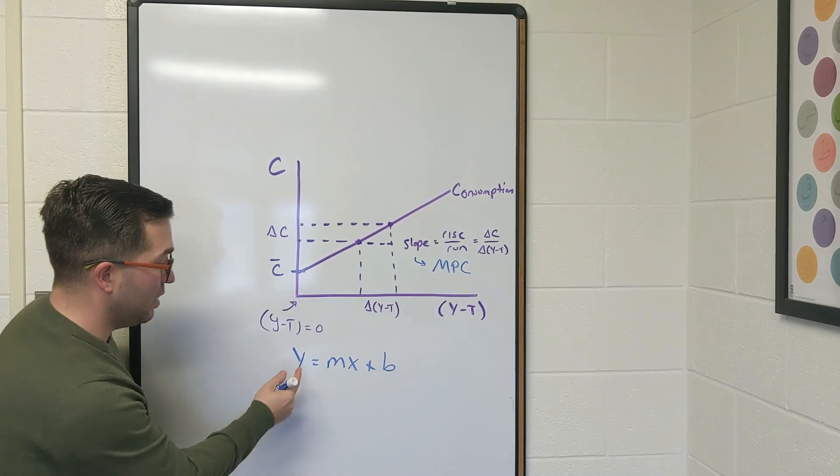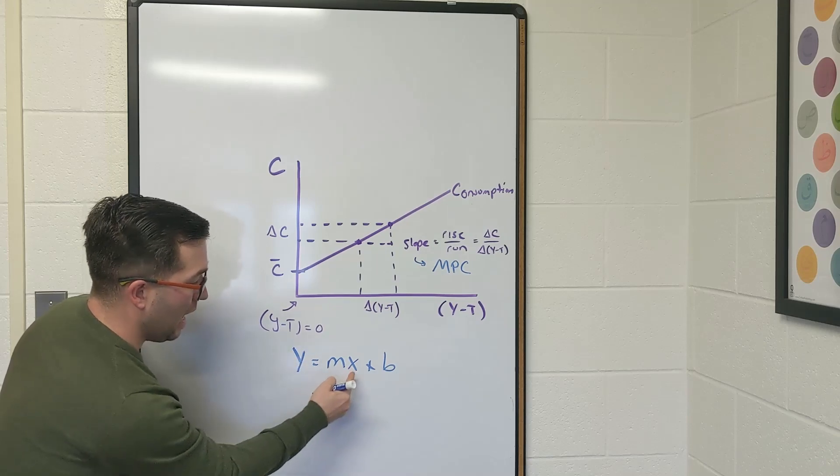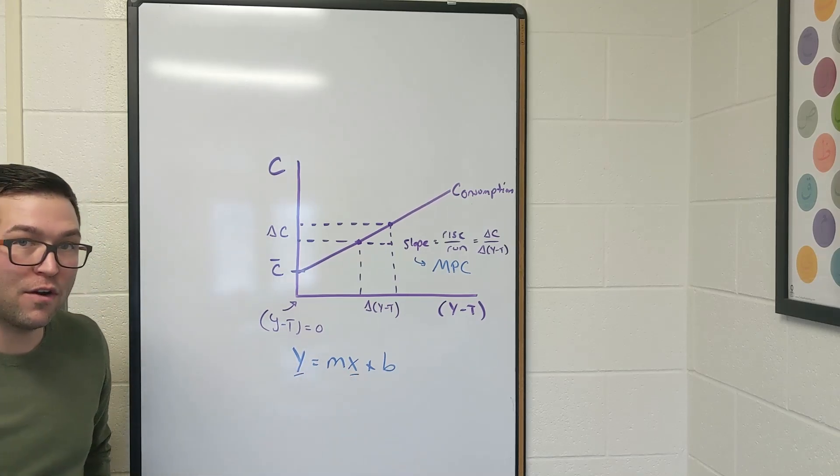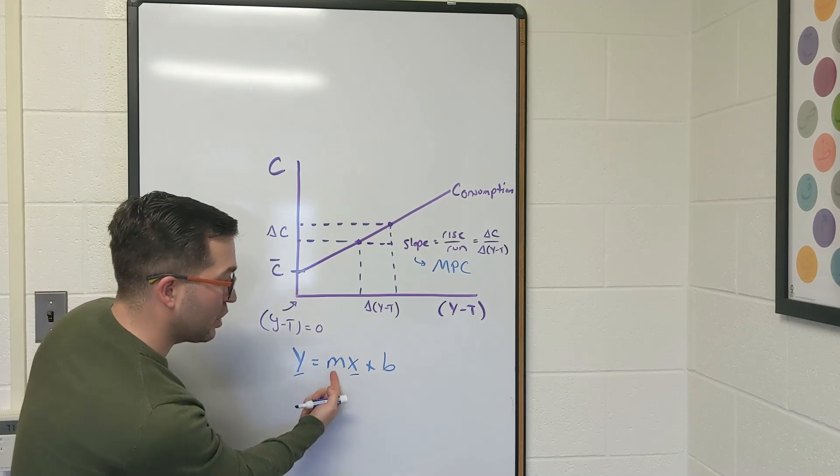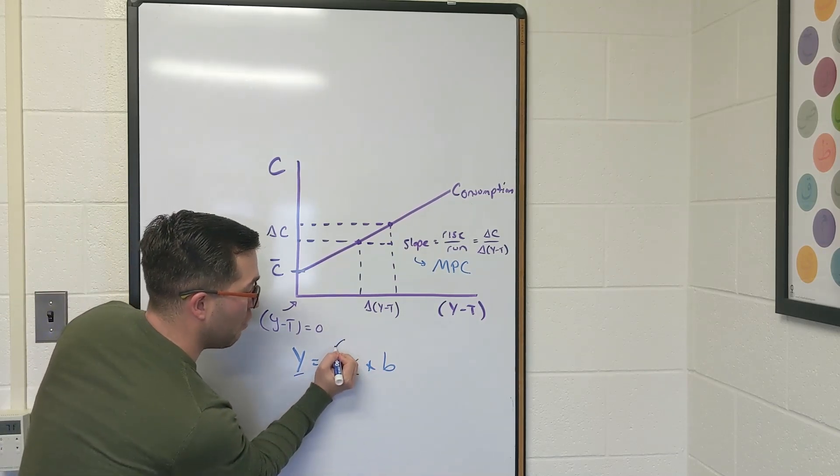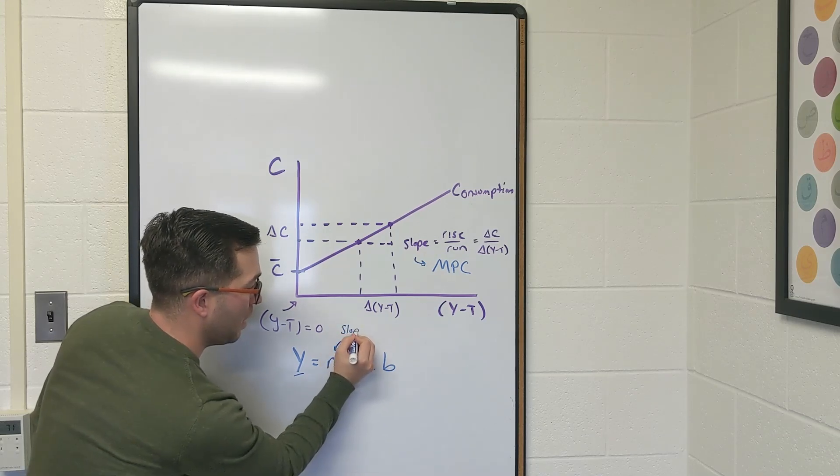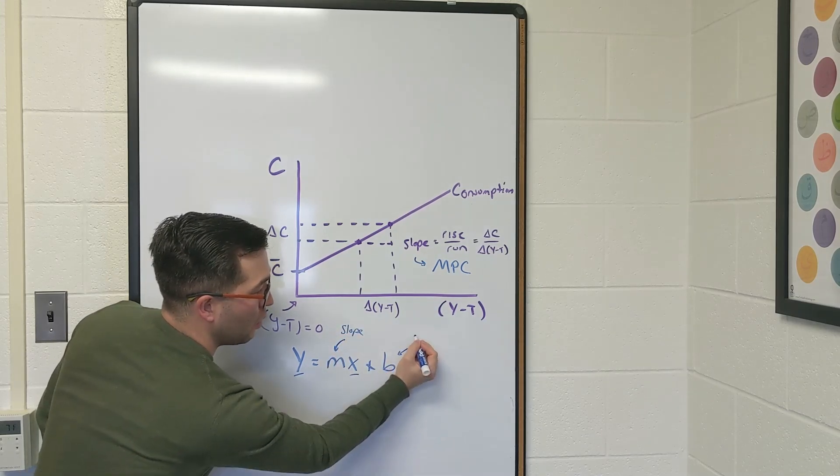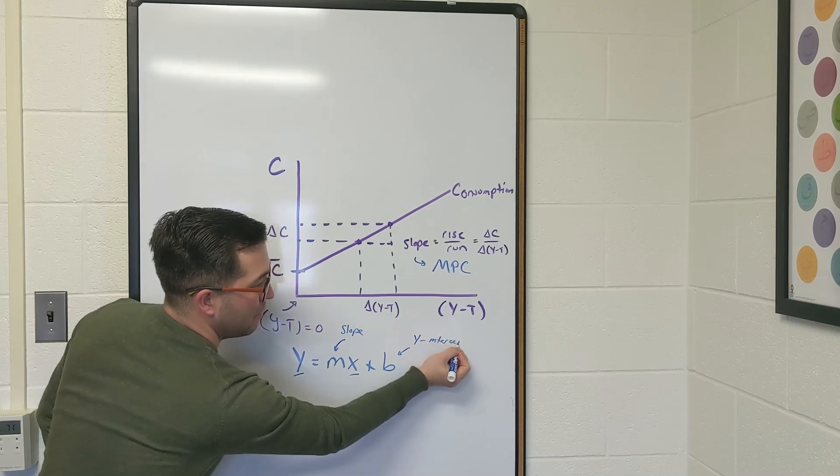In this case, we said your y and your x, those are your two variables, and we have the slope and the y-intercept. So this right here was your slope, and this right here was your y-intercept.